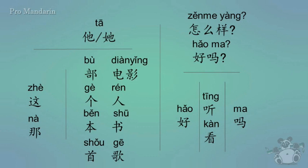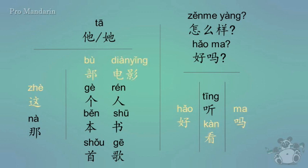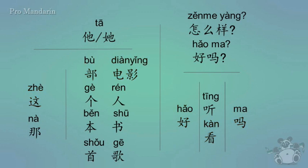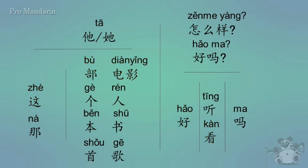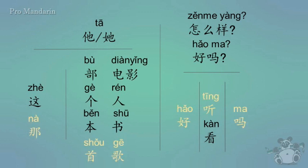We're going to go over a few examples. The first is how to ask how is this movie, or how was this movie. Another example: does that song sound good? You would say nà shǒu gē hǎo tīng ma?